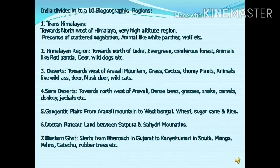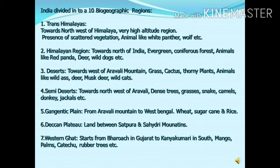Coming down from the north of India, there is a desert towards the west of the Aravalli mountains. Most of the part of Rajasthan and Gujarat is a desert region. The amount of rainfall is very less here. Plants like grasses, cactus, and thorny plants are found. Animals like wild ass, deer, musk deer, and wild cats can be observed. Some area is also treated as semi-desert, which is somewhat less dry than the desert. Here you will find denser trees, grasses, and animals like snakes, camels, donkeys, and jackals. This is found towards the northwest of the Aravalli mountains.